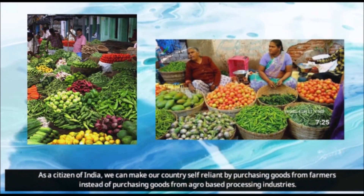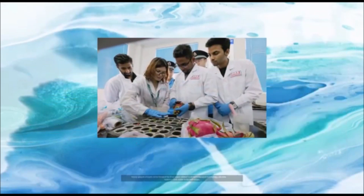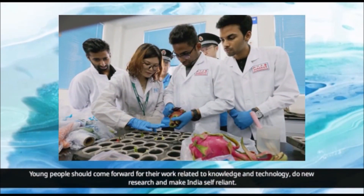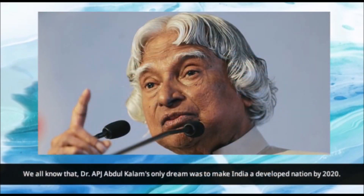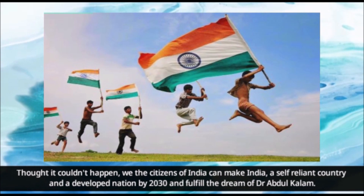As a citizen of India, we can make our country self-reliant by purchasing goods from farmers instead of purchasing goods from agro-based processing industries. Young people should come forward for work related to knowledge and technology, do new research, and make India self-reliant. Dr. APJ Abdul Kalam's dream was to make India a developed nation by 2020. Though it couldn't happen, we the citizens of India can make India a self-reliant and developed nation by 2030 and fulfill the dream of Dr. Abdul Kalam.